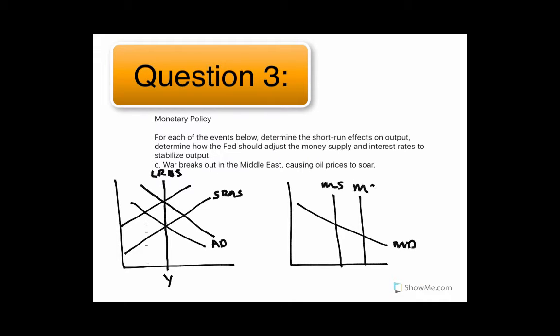Because now when the Fed increases the money supply to money supply 2, the interest rate's going to drop, which is going to increase investment and thus get you back to your long-run curve here.